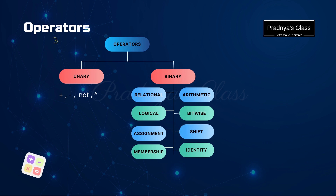The third and most important token is operators. Operators will be used throughout the programming portion. They are categorized into two types: unary and binary. Unary operators operate on only one operand. Plus and minus are both unary as well as binary operators, but 'not' is only a unary operator.